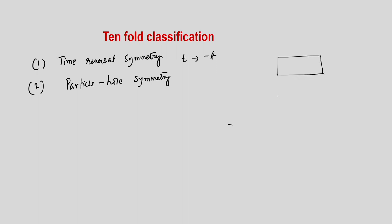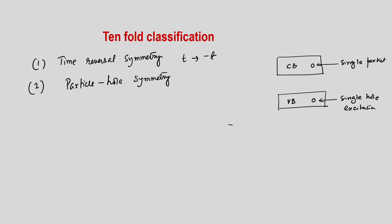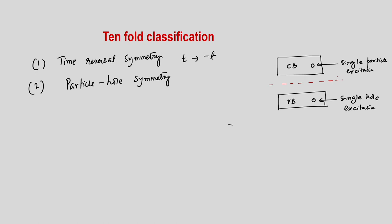For a pictorial representation, let me draw a conduction band and a valence band. This is the CB and the VB, and we create a hole here — a single hole excitation — which will correspond to a single particle excitation here. The Fermi energy divides the spectrum: E greater than E_F and E less than E_F. This is really the particle hole symmetry we talk about.